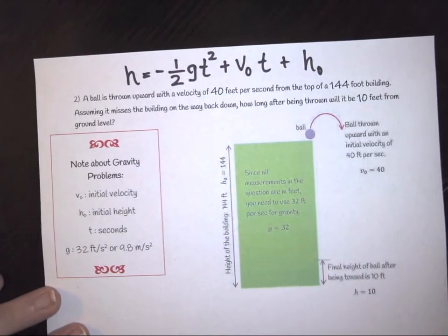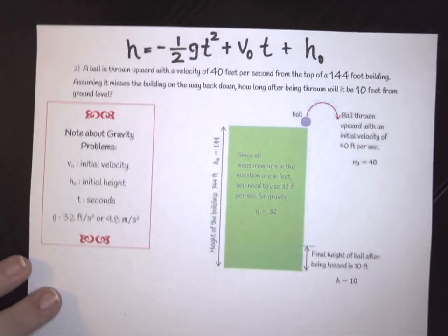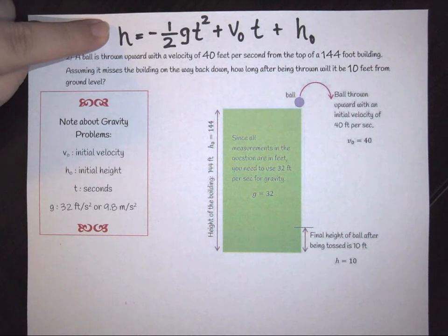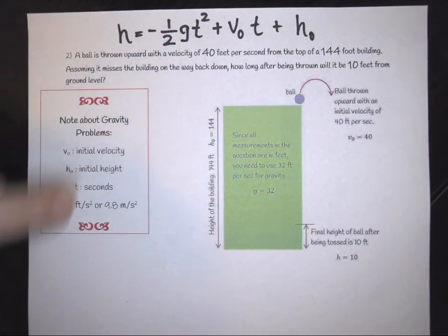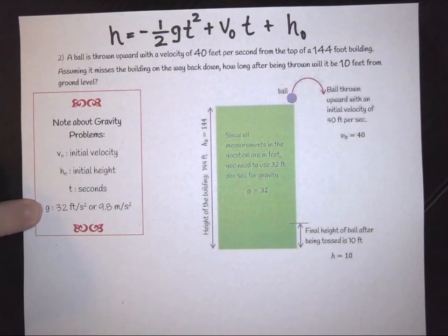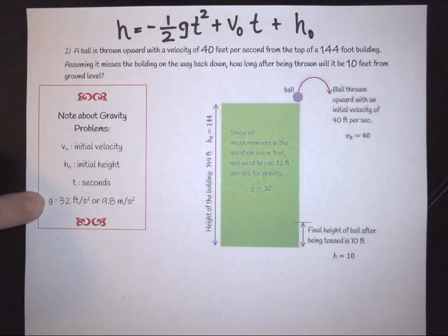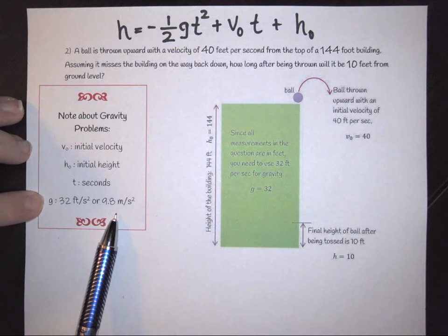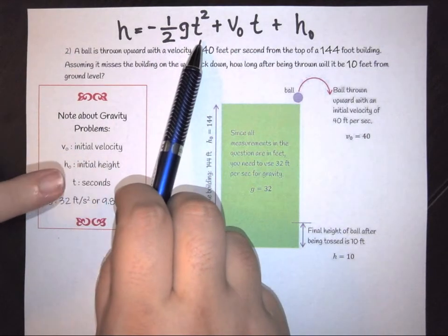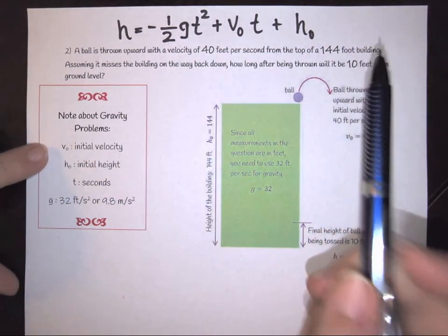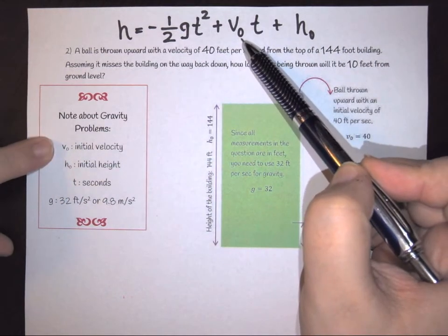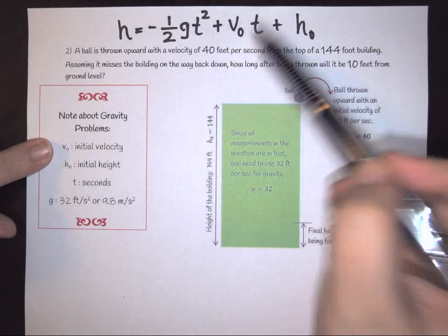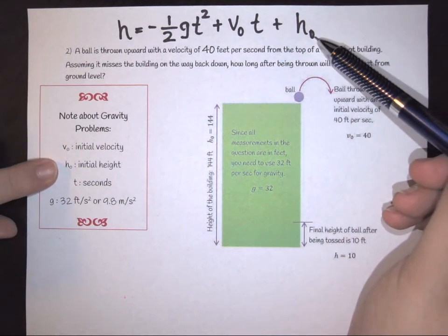Now, the other problem that we have is we have a gravity problem. So this formula up here at the top is actually your gravity formula, where G stands for gravity and is given to you in either 32 feet per second or 9.8 meters per second squared. And that's going to depend on the units in your problem. We know T is going to be your time, which in this case is usually going to be in seconds. We know V-naught is your initial velocity. It's how fast you started out going. And H-naught is your initial height.